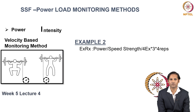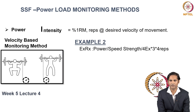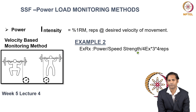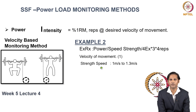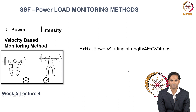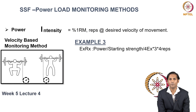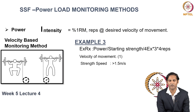For another example of improving power, if you aim to give stimulation to speed strength, the speed strength velocity is higher — between 1 to 1.3 meters per second — and it is associated with a much lighter load. When it comes to starting speed, you match the velocity of movement at greater than 1.5 meters per second, where the external load is your body weight.